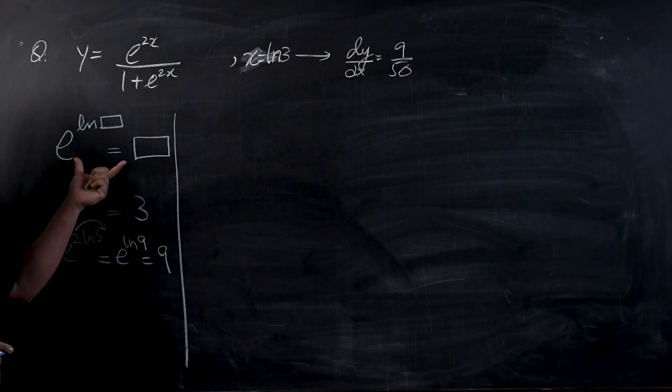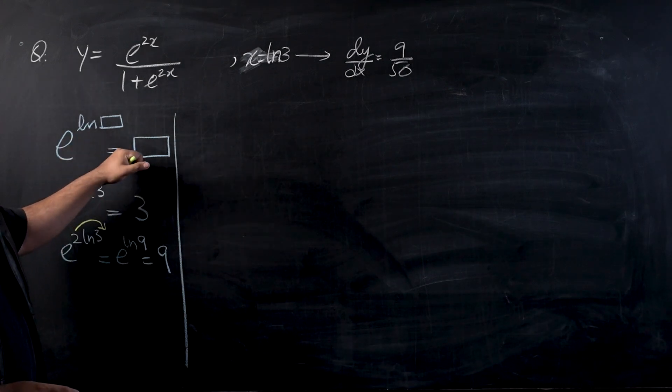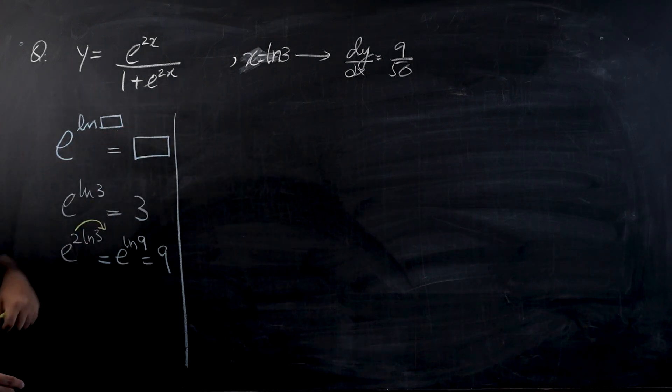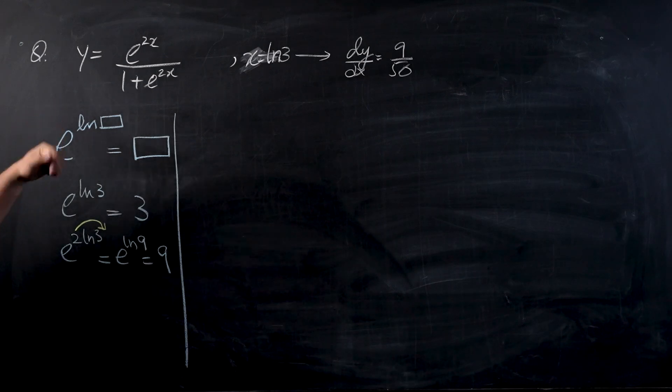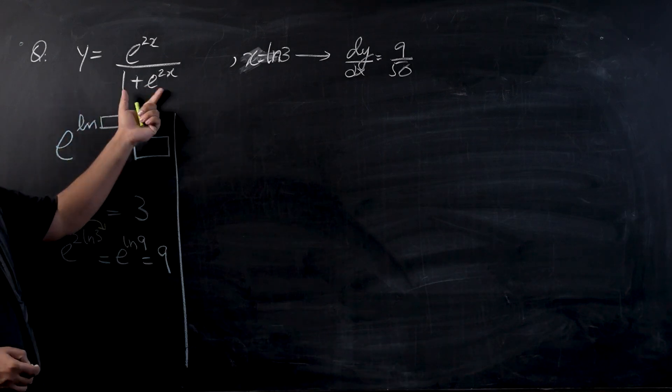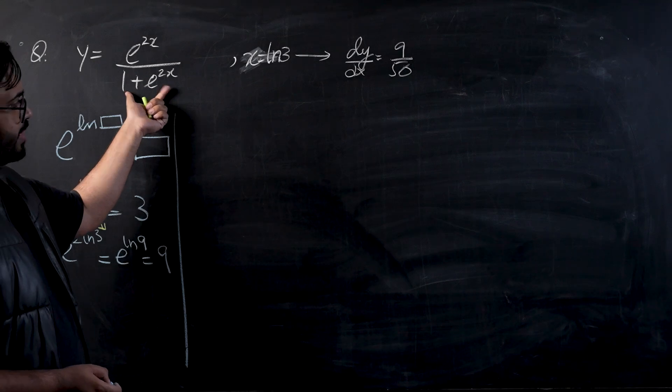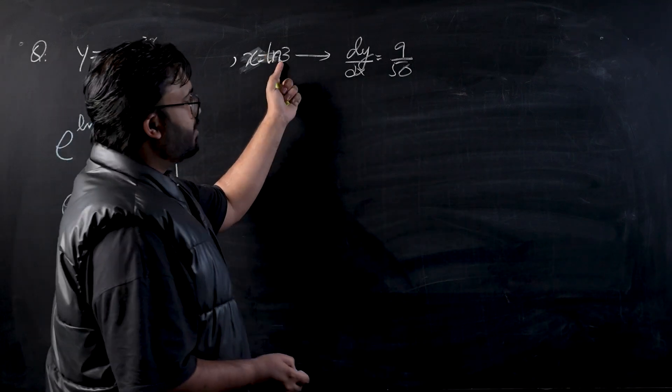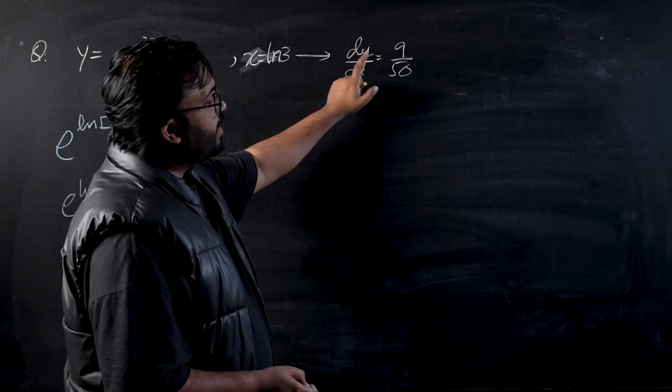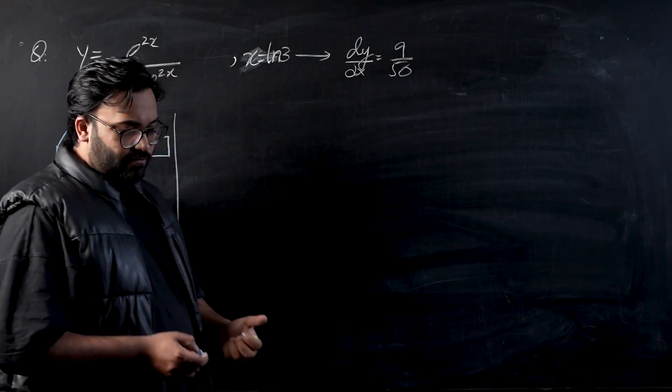So this is a property that is not very much used while we're doing logarithms and it is often tested with differentiation or integration questions. So let's start with this question. The question is you have e raised to power 2x over 1 plus e raised to power 2x. You have to show that when x equals log of 3, dy by dx will become 9 over 50.